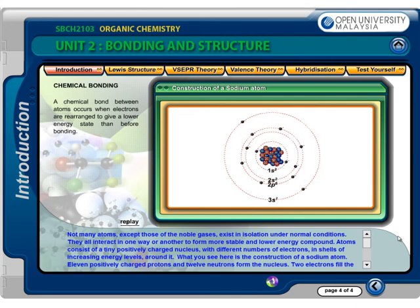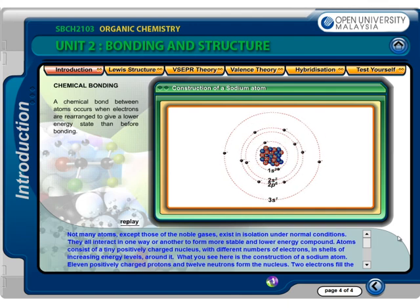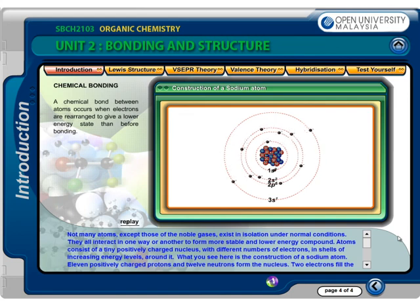The 11 negatively charged electrons balance the 11 positive protons in the nucleus. In a sodium atom, there is a single valence electron in the outermost shell. Valence electrons, which reside in the outermost shell, are the ones involved in chemical interactions and bonding.